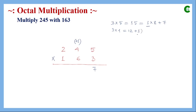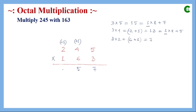Then 3 × 2 = 6, plus carry 1 equals 7. Since 7 is less than 8 there is no carry, so we write 7 directly. This completes the first partial product: 757.